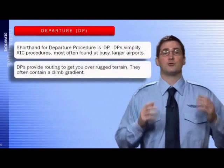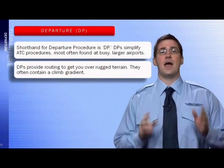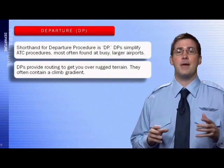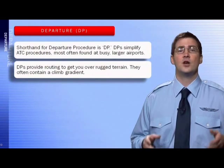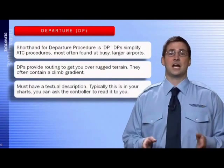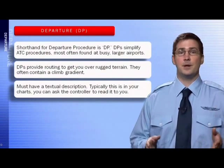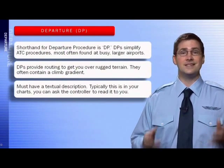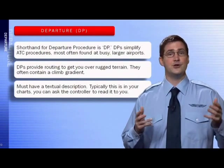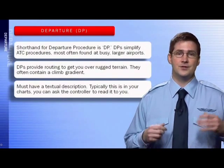DPs provide routing to get you over rugged terrain. They often contain a climb gradient, so you must be certain your aircraft can climb at or above the climb gradient when you accept the DP. You need to have a textual description to use a DP. Typically this is in your approach plates, but if it's not, you can simply ask the controller to read it to you, and after you copy it, you'll have a textual description for your use in the cockpit.